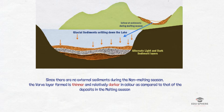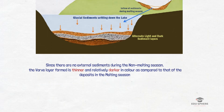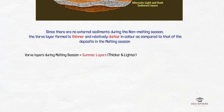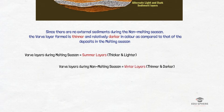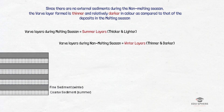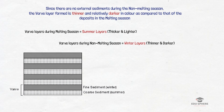These sediment layers, also known as varve layers, deposited during the melting season are called the summer layers, whereas the varve layers deposited during the non-melting season are called the winter layers. These alternate layers of summer and winter sediments generate a sequence of one light band and one dark band.